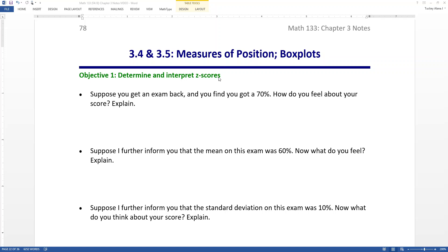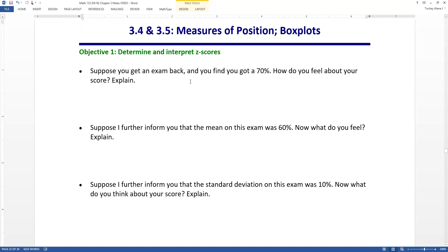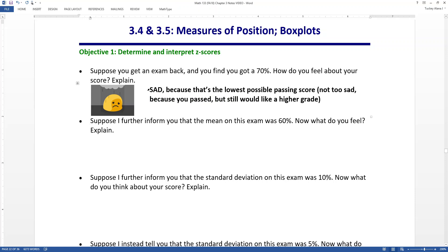All right, so we're going to begin with talking about Z scores. Now, I want you to kind of envision this. Don't look ahead, no fair peeking. Suppose you get an exam back, and you find that you got a 70%. How do you feel about your score? Well, if you're anything like me, you're feeling kind of meh about it. I mean, not too happy. You passed, however you have the lowest possible passing grade, and that's kind of scary. So me personally, I'm kind of sad. All credits to the Google stickers, they're adorable. But I'm feeling kind of sad because it's the lowest possible passing grade. I mean, I'm not too sad because I passed, but I would have liked that grade to be higher.